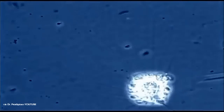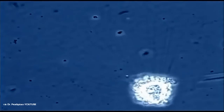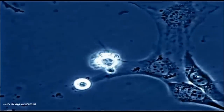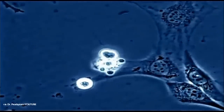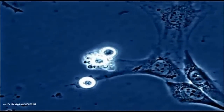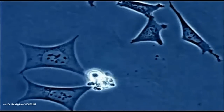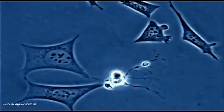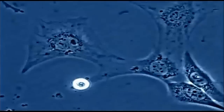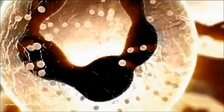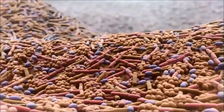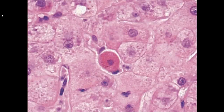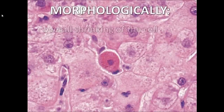Apoptosis is the process of programmed cell death, a highly regulated and controlled process. The main function of apoptosis is to maintain regular cell function and normal cell activities. It requires specific signals from the surrounding environment and ATP energy to begin. Morphologically, apoptosis features an overall shrinking of the cell.